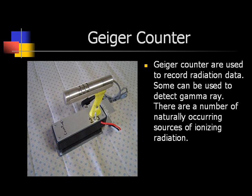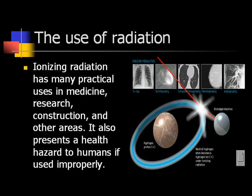Geiger counters are used to record radiation data. Some can be used to detect gamma rays. There are a number of naturally occurring sources of ionizing radiation. Ionizing radiation has many practical uses in medicine, research, construction, and other areas. It also presents a human health hazard if used improperly.